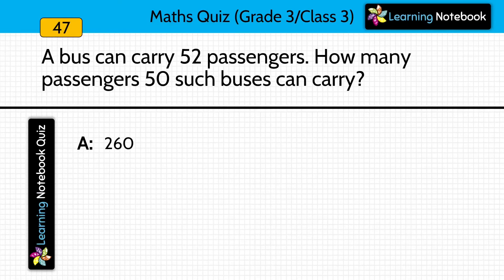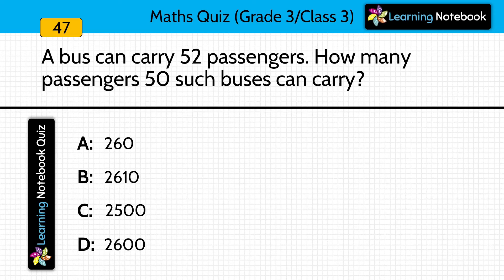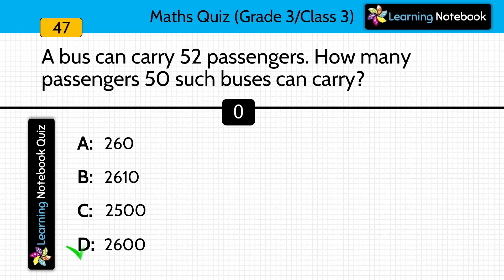A bus can carry 52 passengers. How many passengers can 50 such buses carry? Answer is 2,600. To calculate this, we simply multiply 52 by 50 to get our answer.